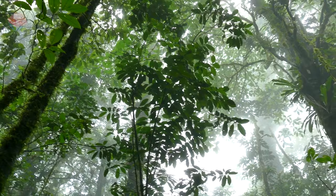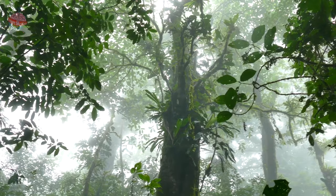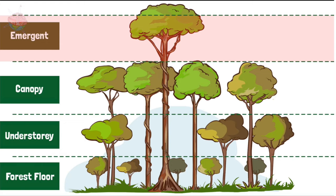Since there is so much rain, most trees are broadleaf trees with smooth, thin bark. There is no need for thick bark because the trees do not need to hold on to moisture. There are four zones in a tropical rainforest.